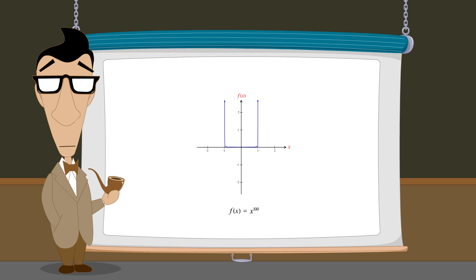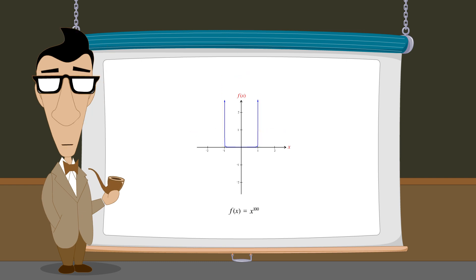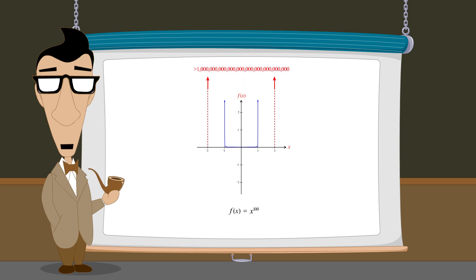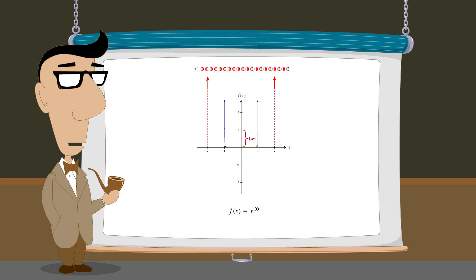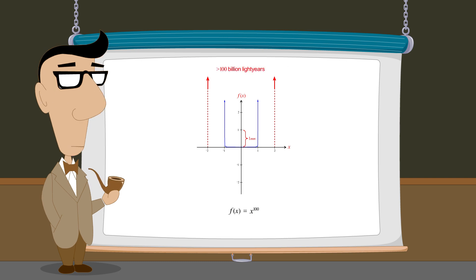For instance, when x has a value of 1.1 or negative 1.1, the function's value is approximately 13,781. And for x values of 2 or negative 2, the function has a value of more than one trillion trillion million. In order to graph this function for those values of x, even if the unit distance on our graph was only one millimeter, we would need a graph over one trillion trillion million millimeters tall. That would require a graph taller than one hundred billion light-years, which is considerably larger than the diameter of the observable universe.